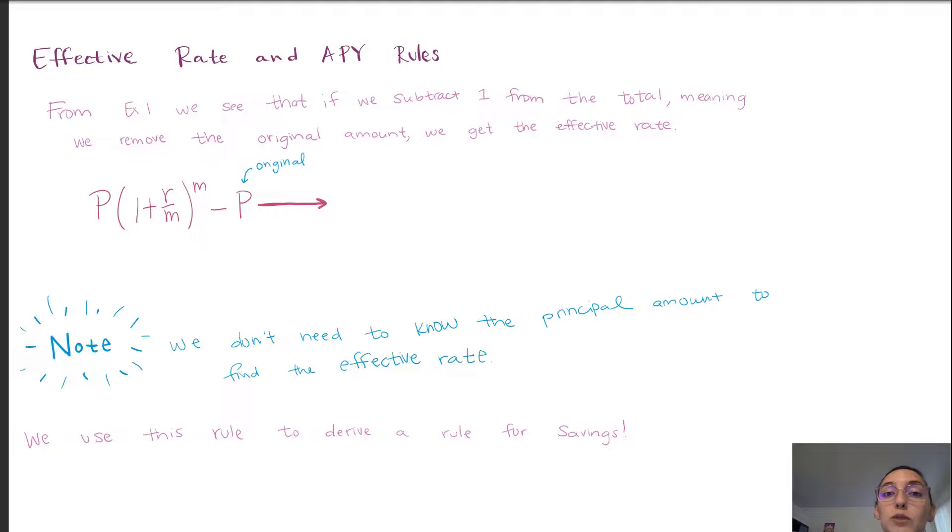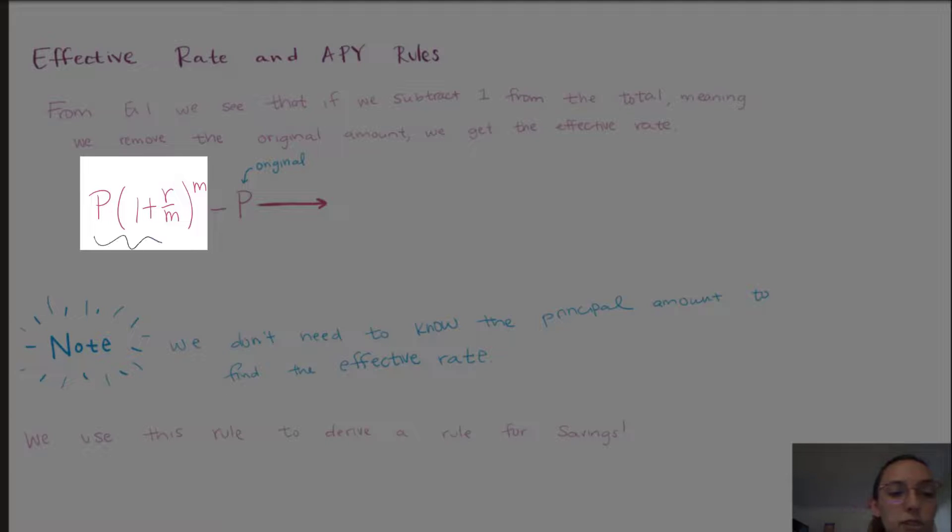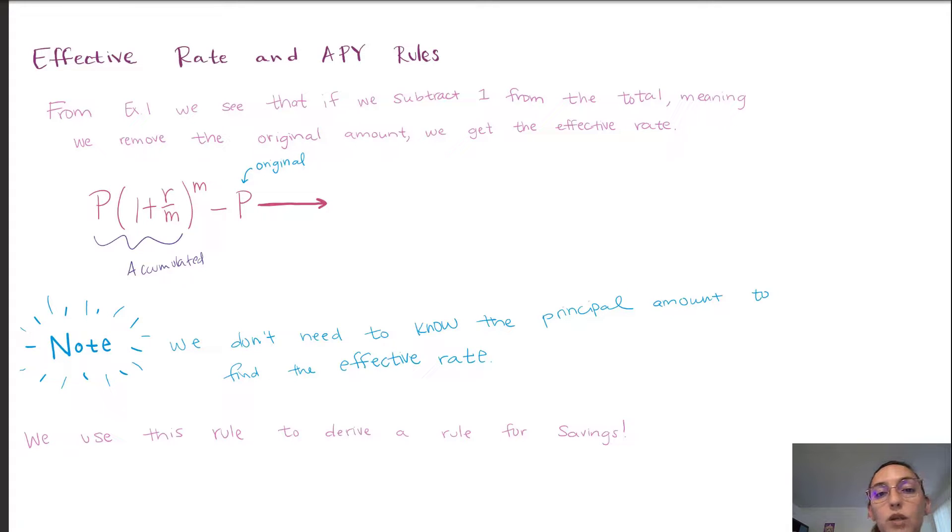Now, from the example, we're able to then derive a rule. What we did in the previous example was we determined how much money we were going to accumulate through compounding. And that's this portion. That is the accumulated amount. Then what we did was we removed the original amount, the P, or in our case, it was represented by the 1. And that is what gave us our effective rate.